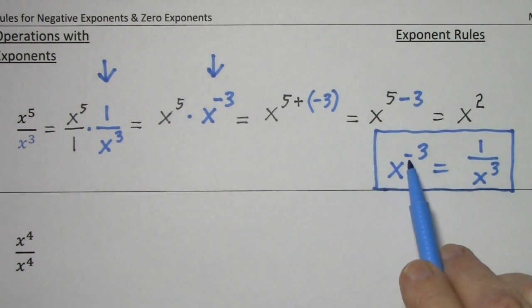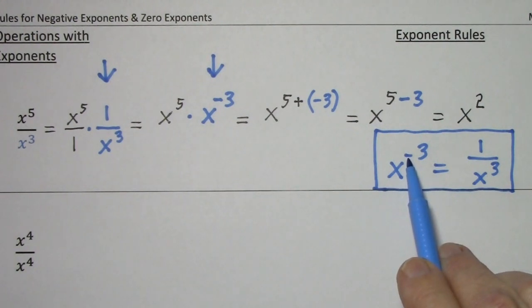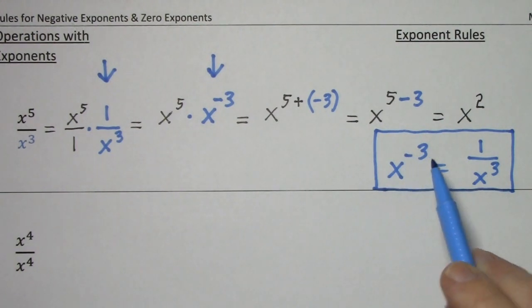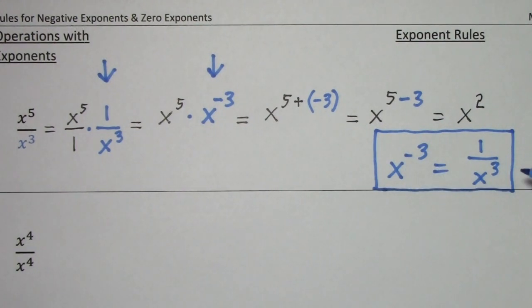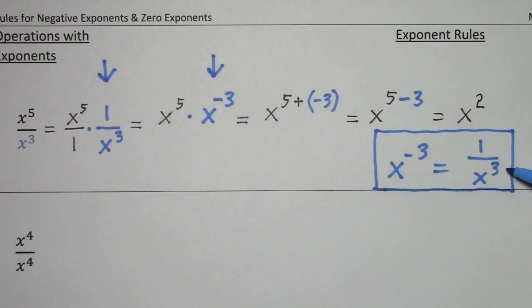In effect, when you have a negative exponent, you can interpret that as meaning take the reciprocal of whatever I'm attached to. I'll be going over many examples of this.